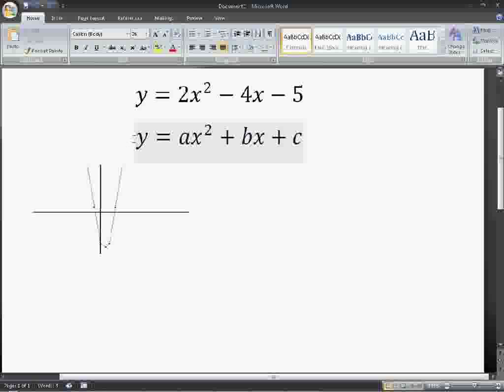So, here's the formula that you would use. y equals ax squared plus bx plus c, which the numbers are 2 is a, negative 4 is b, and negative 5 is c.